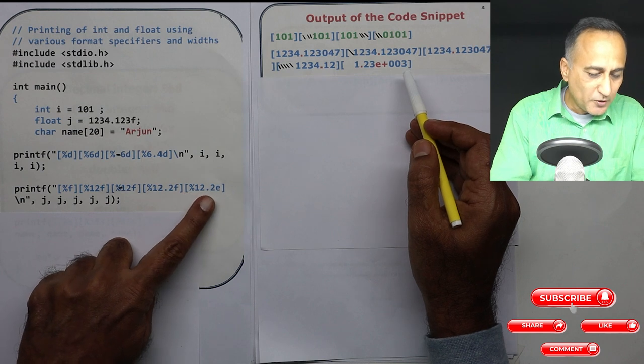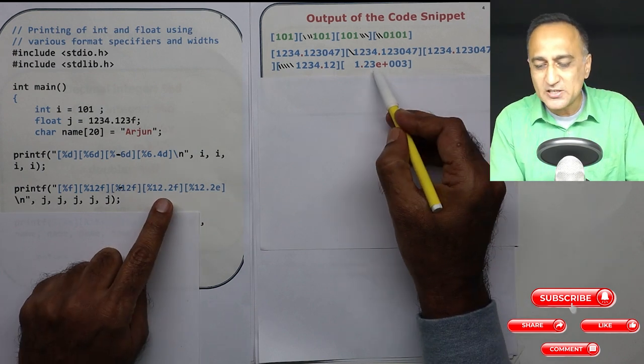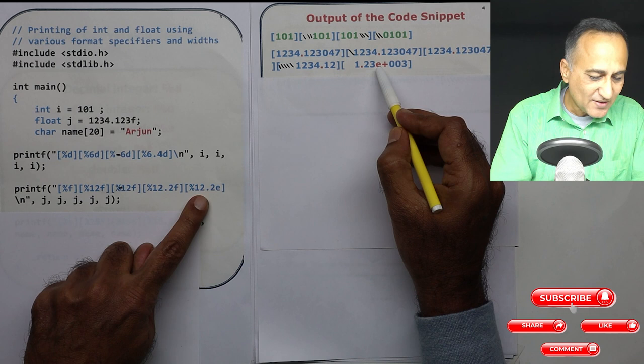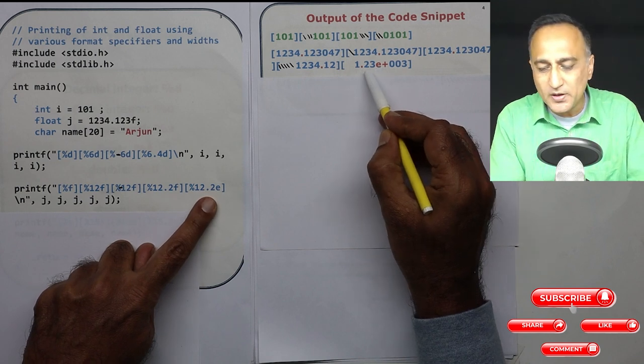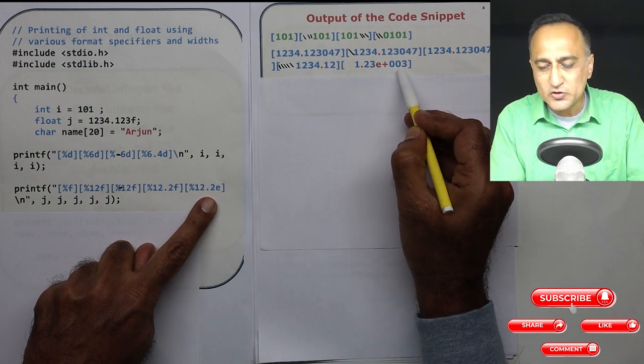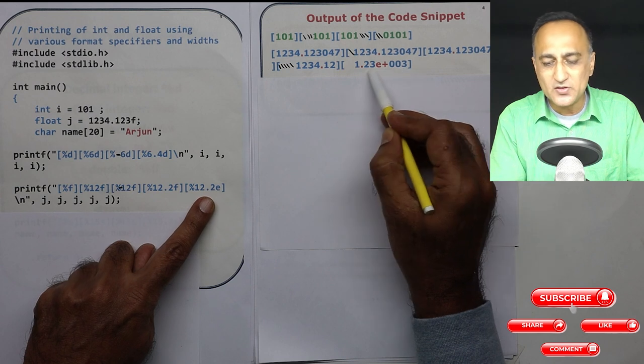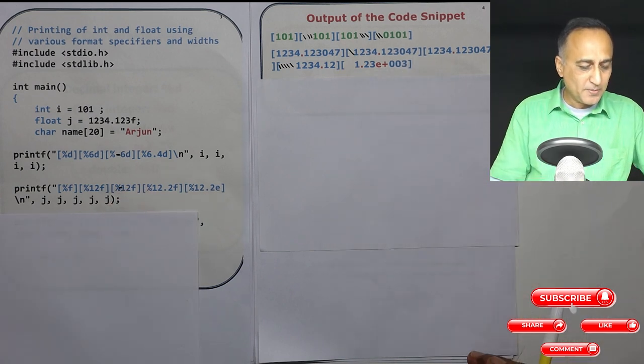Now this one 12.2e, e stands for the exponential format. So since I have given 0.2 it's going to print only 1.2e raised to 003. So this is the exponential format of printing.